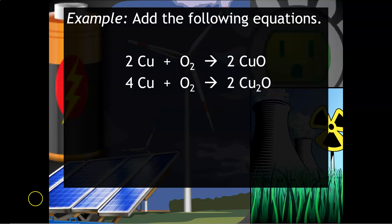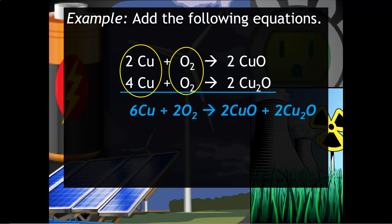Here's another example. You want to add these together. Notice that you have the substances on the left hand side. They're the identical substances. So you want to add those together. None of the substances are going to cancel out though in this example. So when you rewrite this you're going to add the two and the four for the copper and the one and the one for the oxygen.